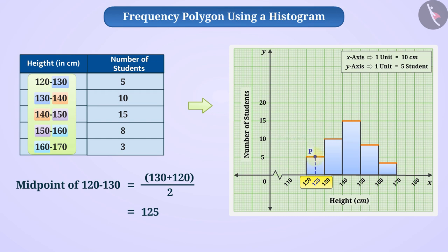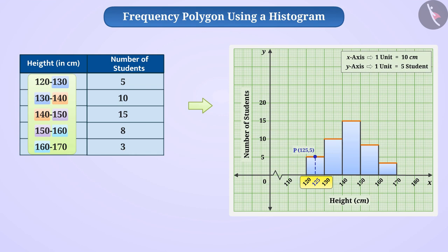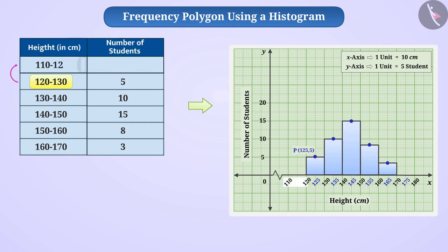Let P be the middle point obtained. The coordinates of point P are 125 and 5. Similarly, we will find the midpoint of the upper sides of all the rectangles. We assume that the class interval before 120 to 130 is a hypothetical class interval of 110 to 120 with a frequency of 0.